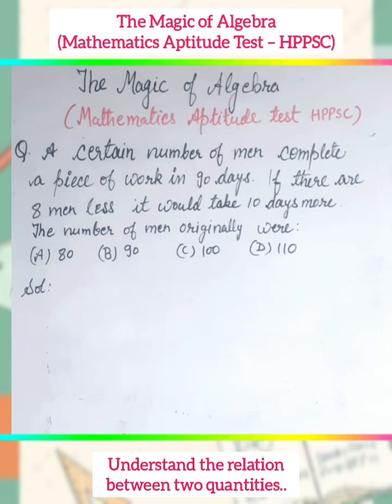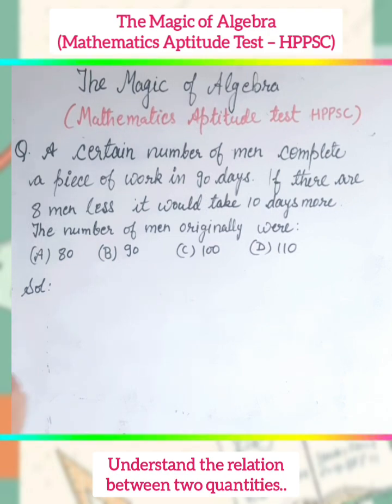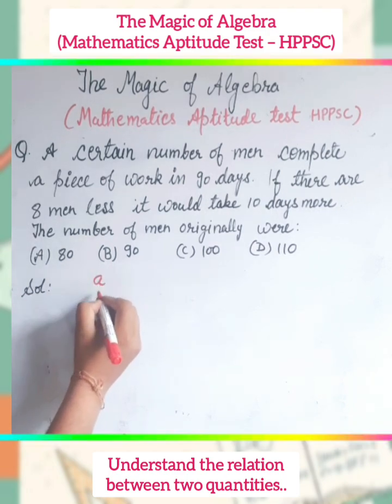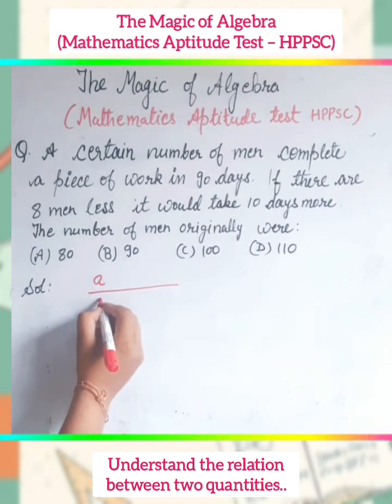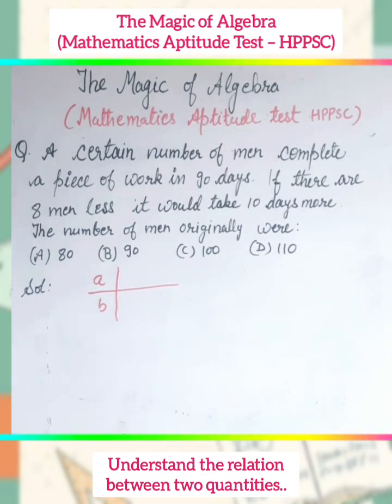Observe carefully. We have two quantities: number of men and number of days to complete work. Let us take these two quantities with the help of two variables, A and B.